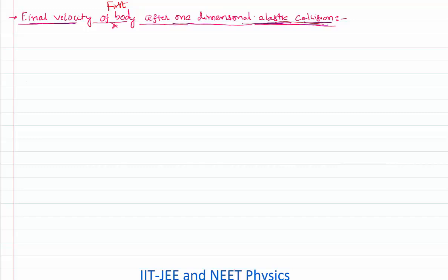Hello everyone, welcome to this video lesson. In this video lesson we are going to derive an equation about the final velocity of a body after a one-dimensional elastic collision. First of all, we need to know what we mean by an elastic collision. A collision is said to be elastic if both momentum and kinetic energy are conserved during that collision. One-dimensional means before and after the collision the bodies are moving in the same direction.